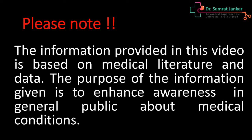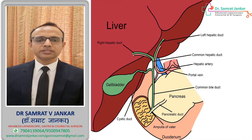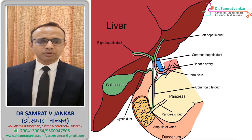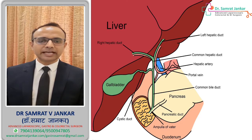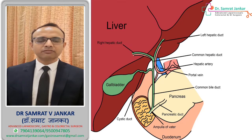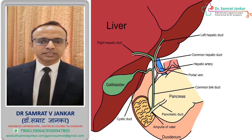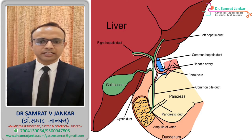To understand gallstone disease, we need to understand what the gallbladder is and its function. The gallbladder is a small organ located just beneath the liver. The liver is the main factory where bile is secreted, and there is a tube called the common bile duct connecting the liver to the duodenum, part of the small bowel, where bile goes for digestion. Whenever we are not eating, bile from the liver is diverted towards the gallbladder, which acts as a storage organ. Whenever we eat food, a neurohormonal signal makes the gallbladder contract, and the bile is pumped into the duodenum for digestion.